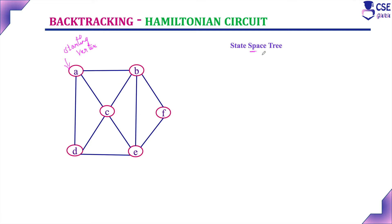In all cases — in the N-queens problem as well as the subset sum problem — we have constructed the state space tree. Similarly, in the Hamiltonian circuit problem also, we will construct the state space tree. The state space tree starts with the initial vertex as the root. From that root, it proceeds to develop the next level component depth-wise. Whenever it reaches a dead end — meaning the next level component cannot be generated — it backtracks to the previous state and checks the other possibilities.